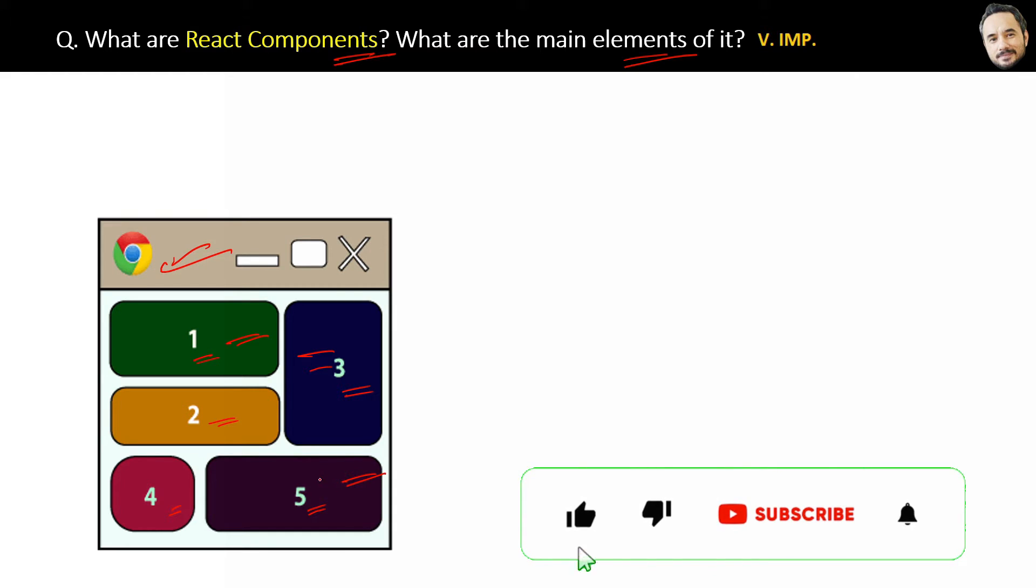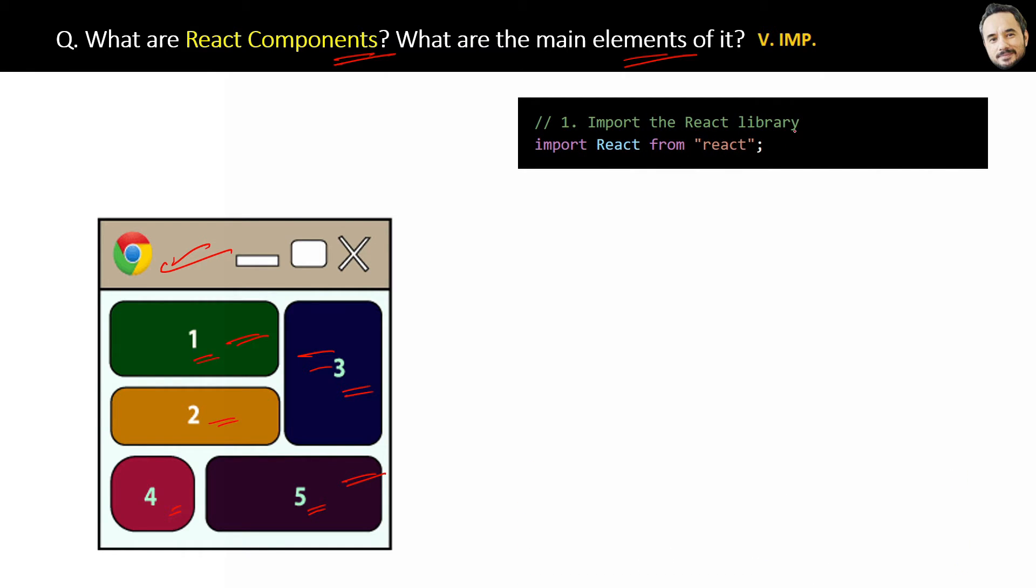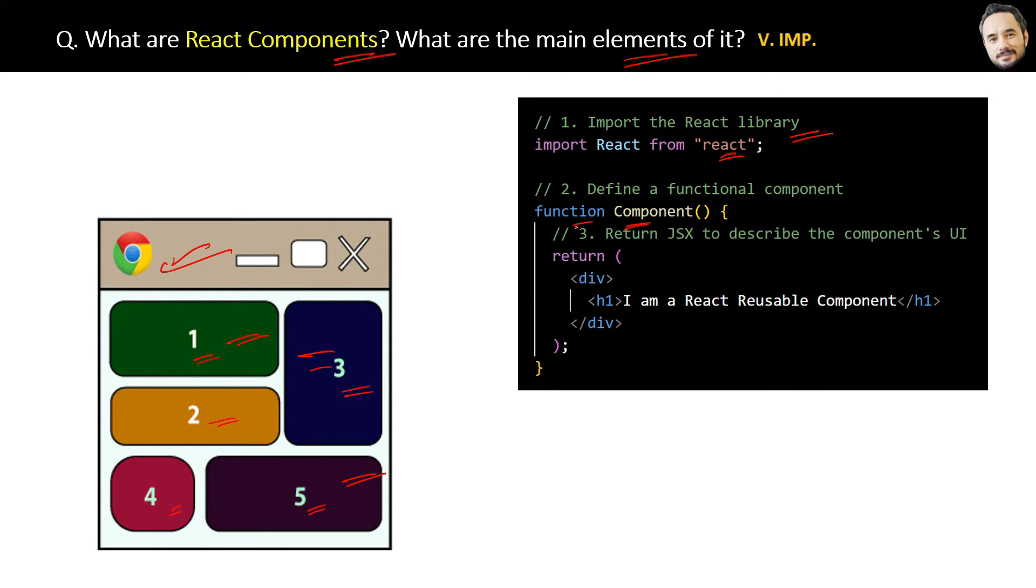Then here is the code structure of a very simple React component. First, React library is imported, and then a functional component is defined that returns this JSX, which is then rendered in the UI.